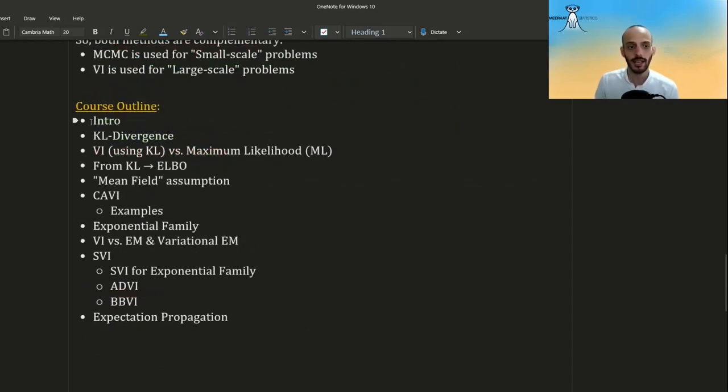Finally, I want to give a course outline. We are now finishing with the intro. After that, we will talk about the KL divergence. Then we will see what is the relation between VI and maximum likelihood. Then we will see how we can get from the KL into the ELBO, this quantity that doesn't depend on the normalizing constant. We will have a more in-depth look at mean field assumption and what is going on there.